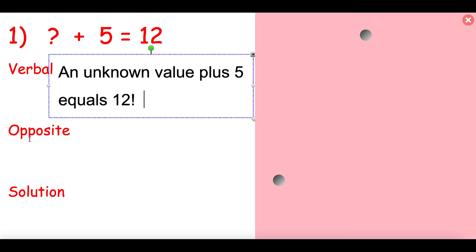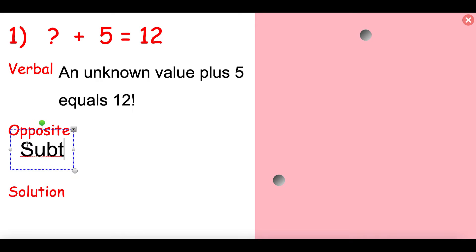So let's talk about the opposite. What is the opposite of adding five? The opposite of adding five would be subtracting five. And the solution would be what? If I, what number plus five equals twelve? I would do seven. That's right. So seven plus five equals twelve.